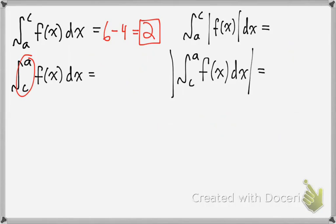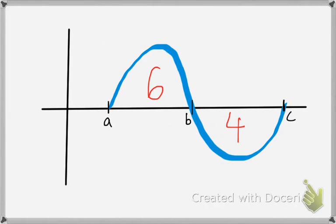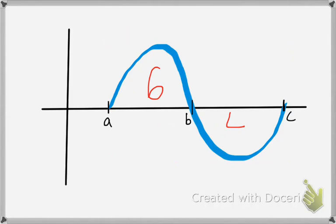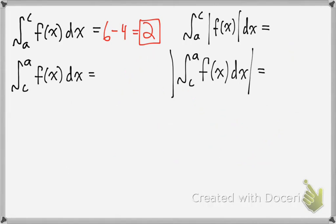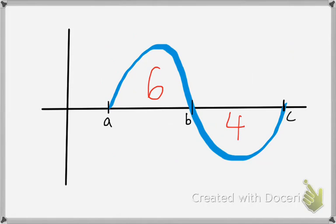Now what if you flip the limits of integration — instead of a to c, now you're c to a. So that means you're integrating in this direction, which means your answer is just going to be the opposite. So this would be negative 2. Another way to think of it is this would be positive and this would be negative, and you would get negative 2. So that's how you get that one.